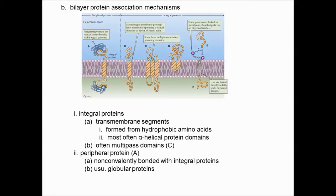Integral proteins span the membrane or at least have a good membrane-spanning structure. Some are almost entirely alpha-helical proteins going right through the membrane, and many are multipass — rather than a single pass, especially transport proteins make seven or eight passes through the membrane. Some don't go all the way through. Peripheral proteins, shown in blue, are non-covalently bonded as a rule to the integral proteins — very easy to remove. They play interesting roles due to this nature and exist both extracellularly and intracellularly, most definitely globular in structure.